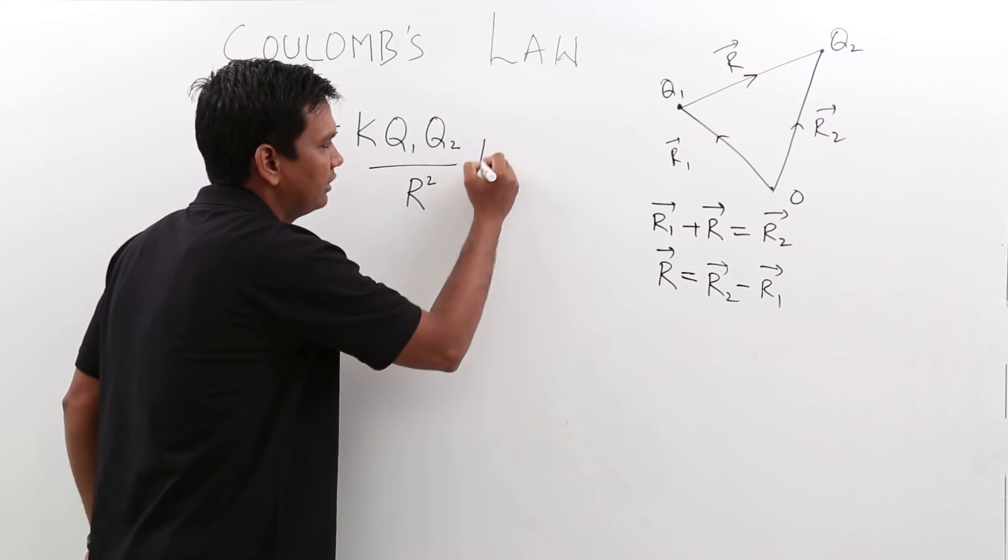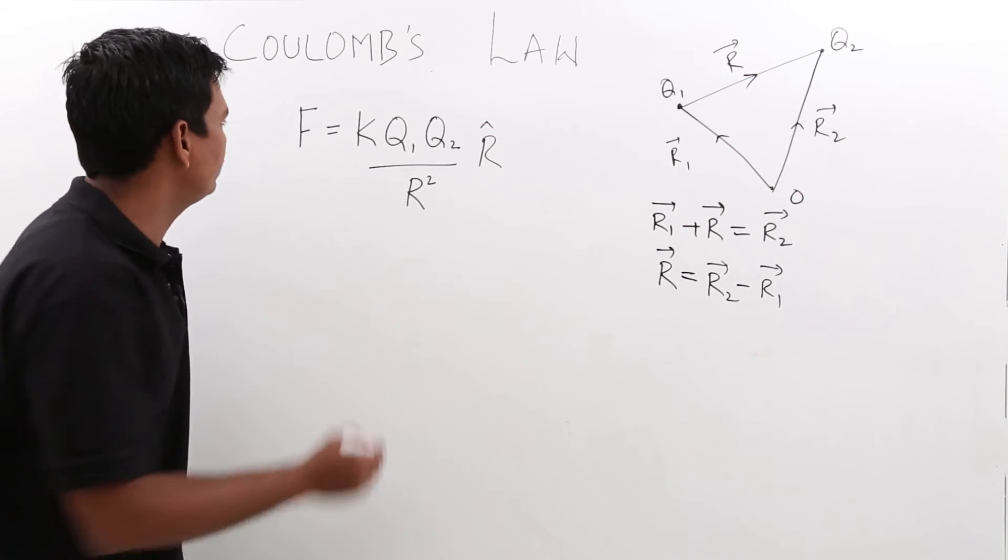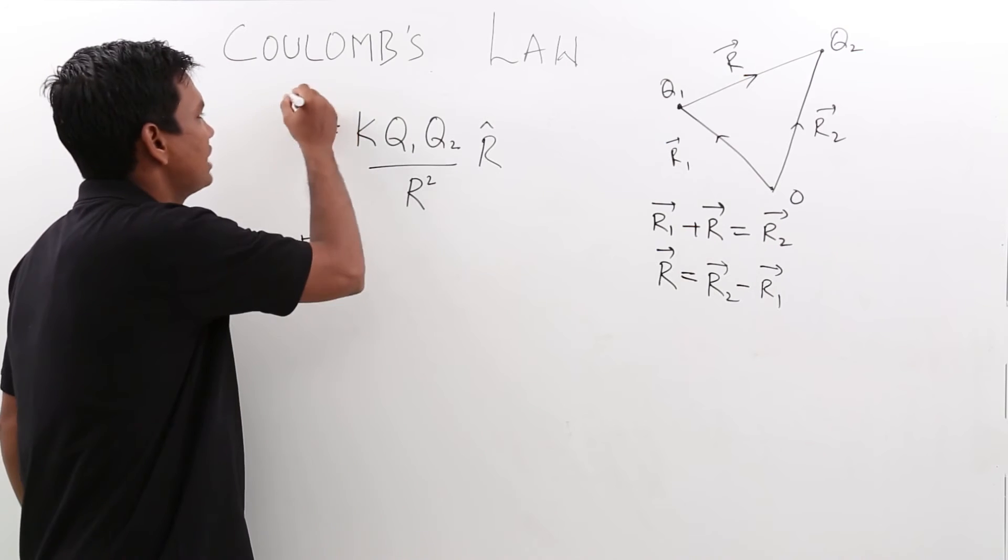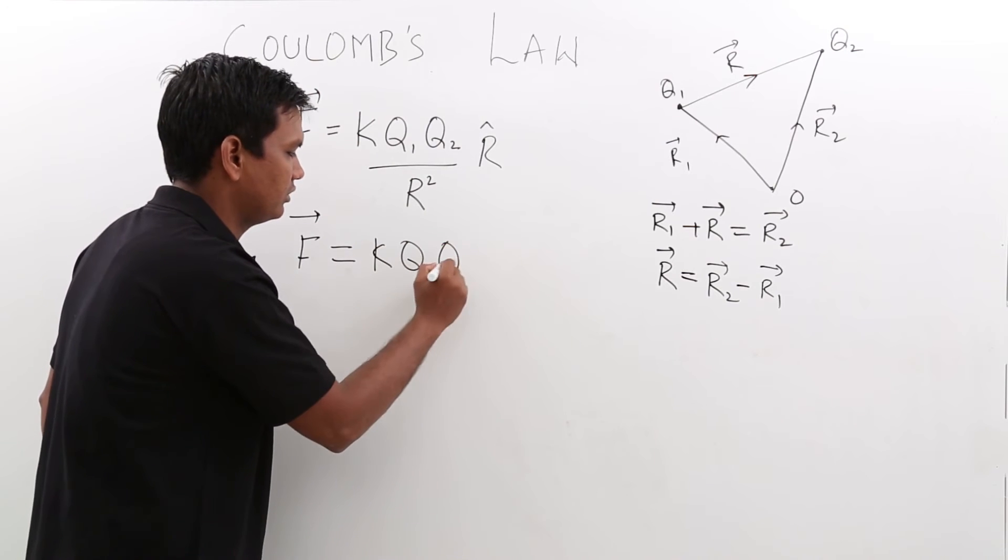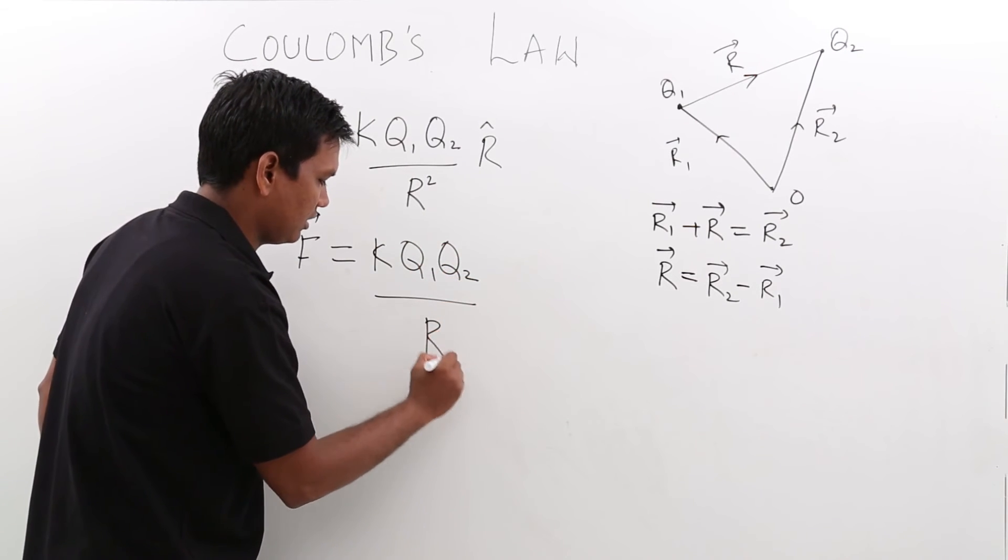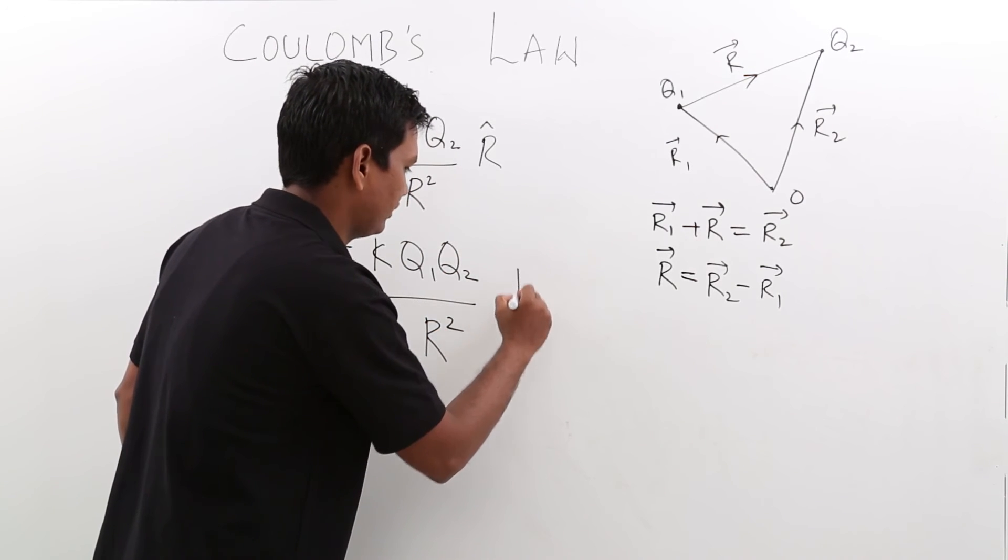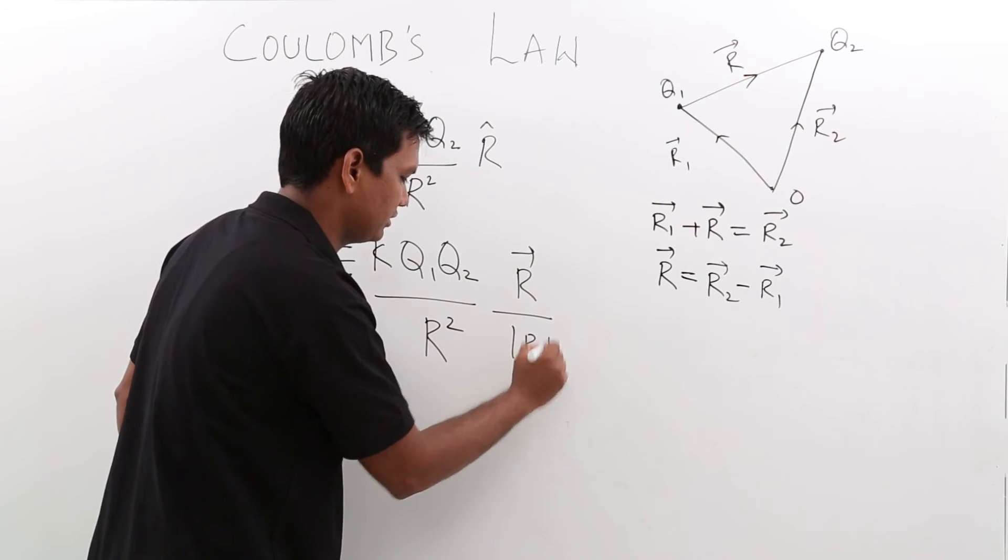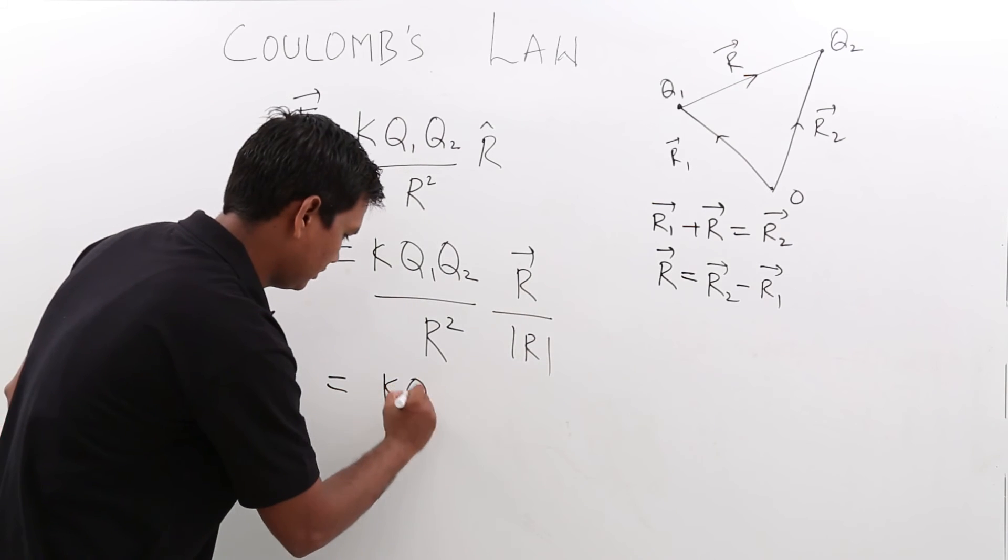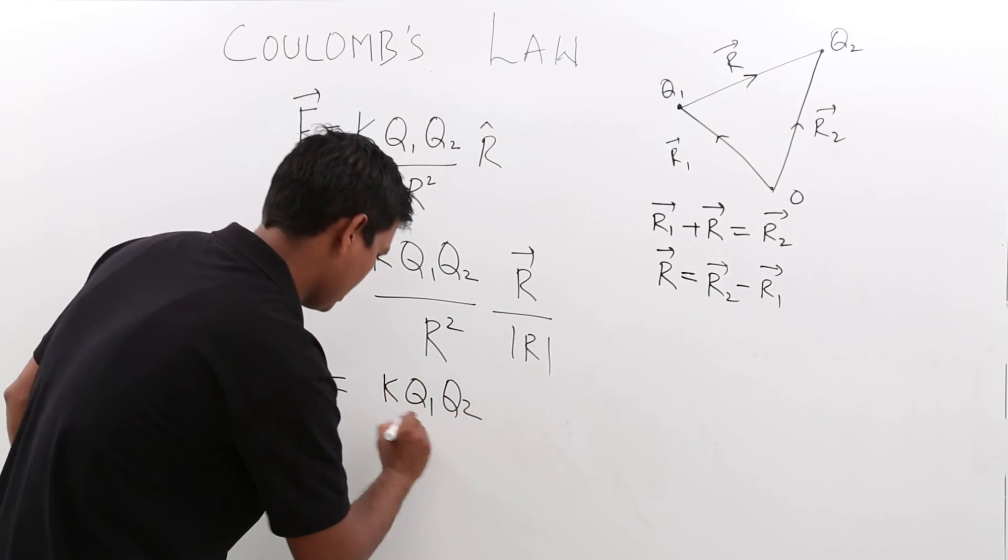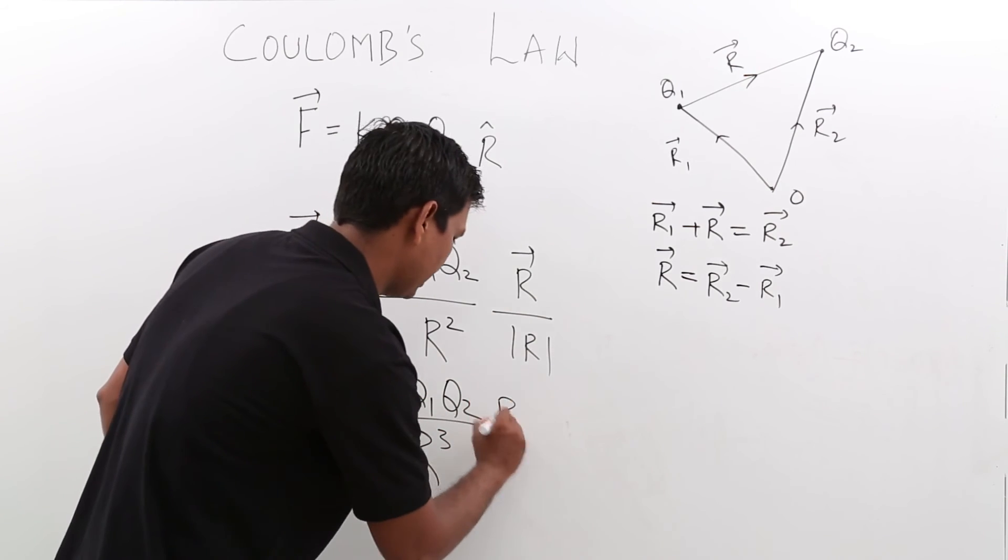So it would be given by an r cap, and you know that the unit vector is nothing but the vector by the magnitude. So my force, which has to be a vector quantity, should be k Q1 Q2 by r square, and r cap would be nothing but my r vector by mod r, which ultimately comes out to be k Q1 Q2 by r cube, and this should be an r vector.